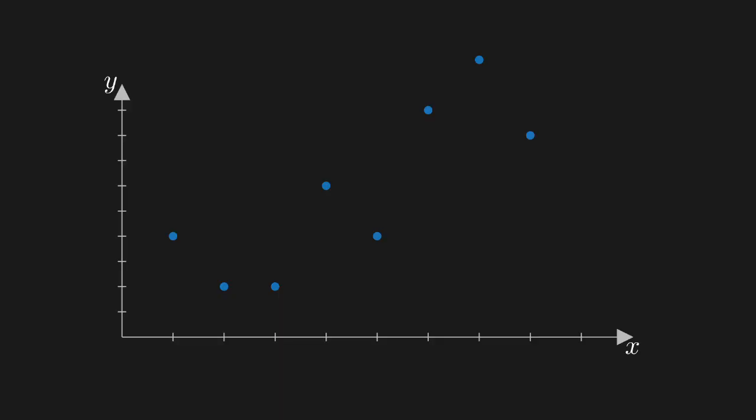Suppose we have a discrete data set that we want to represent as a continuous function. So we look at the data and think, this looks like it's trending upwards somewhat linearly. Let's find the line that best represents this data. But how do we do that?